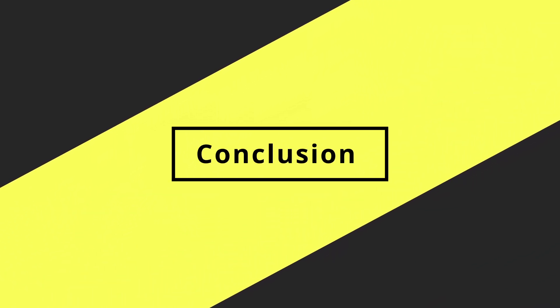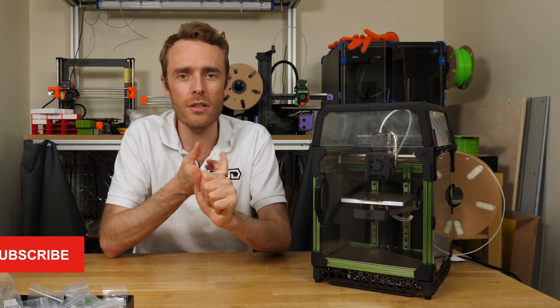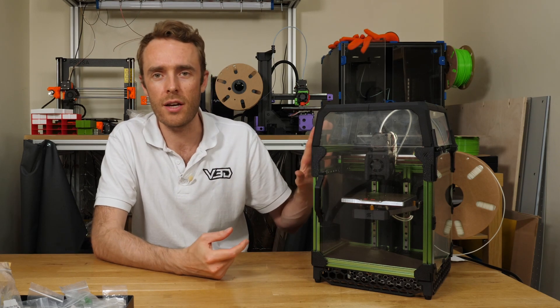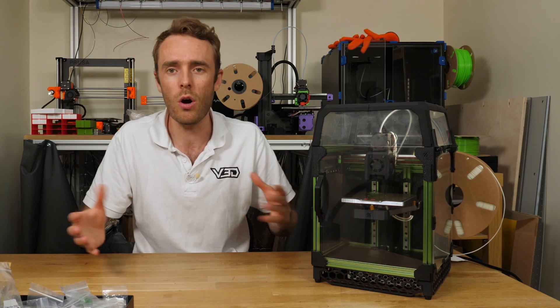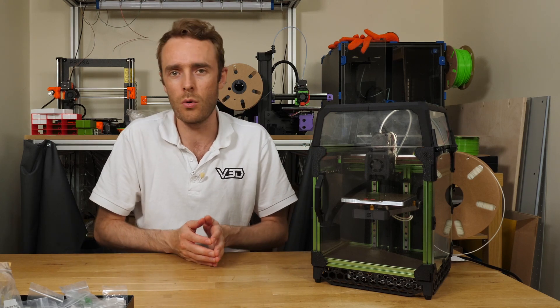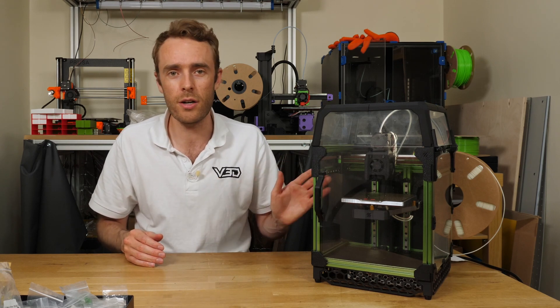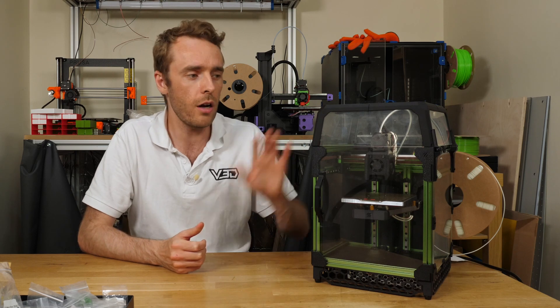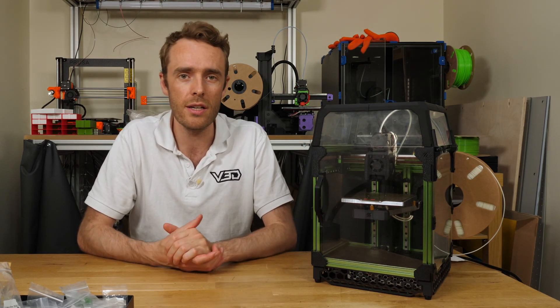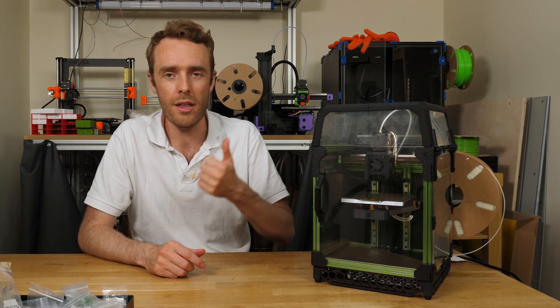My recommendation on printers is get the smallest printer you can that prints the size parts that you need. Obviously if you're printing parts every day that are 200 mil long, wide, whatever, this printer is not going to be suitable. But if all the parts that you print, or most of them, fit in this build volume, it's a blooming great printer for doing that. So I really like having small printers that have a big enough bed to print all the parts that I typically need.